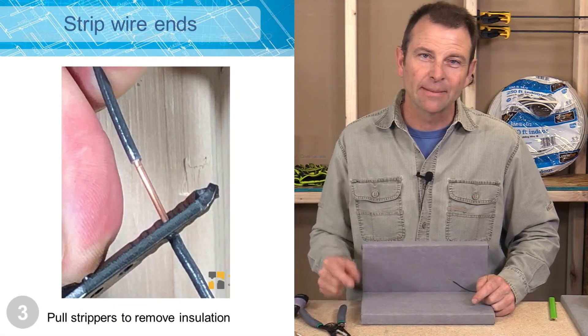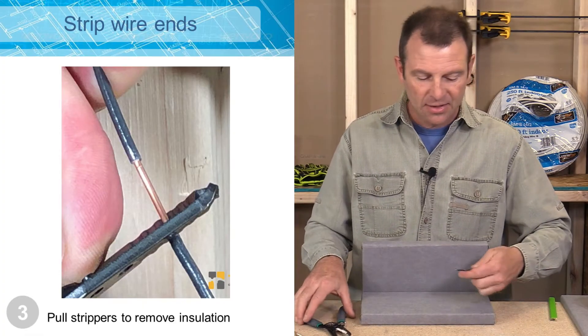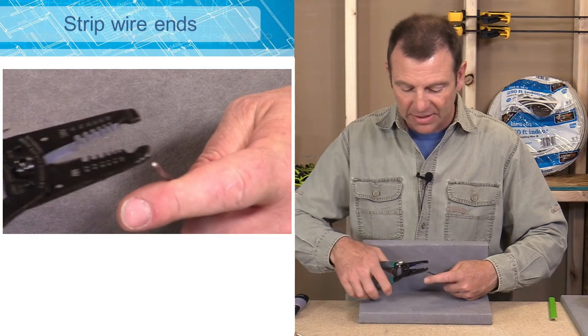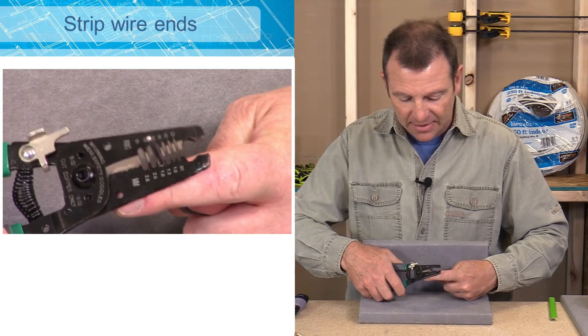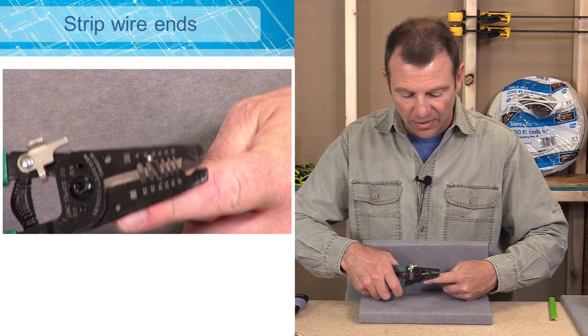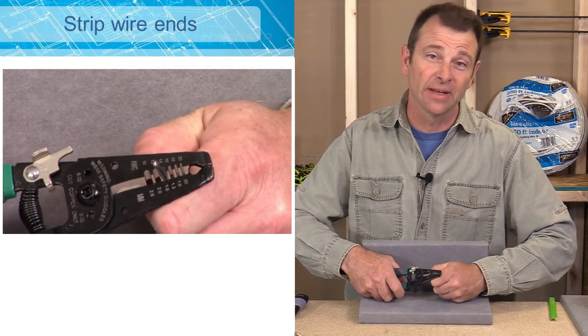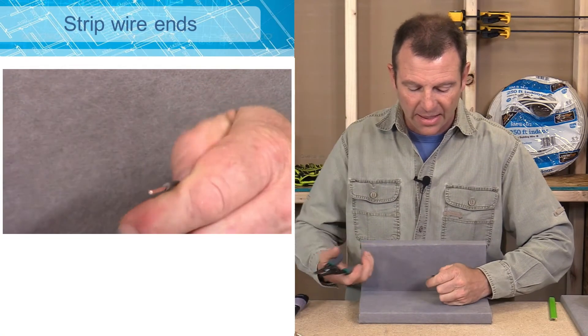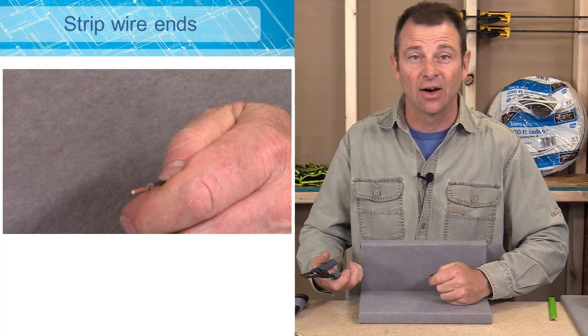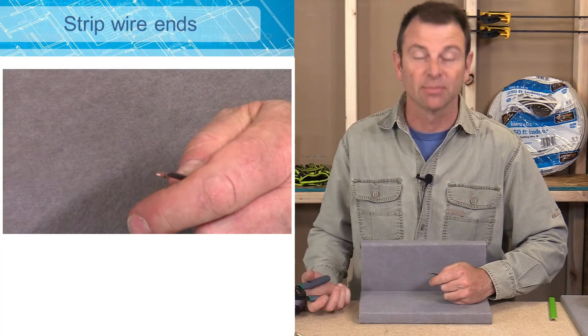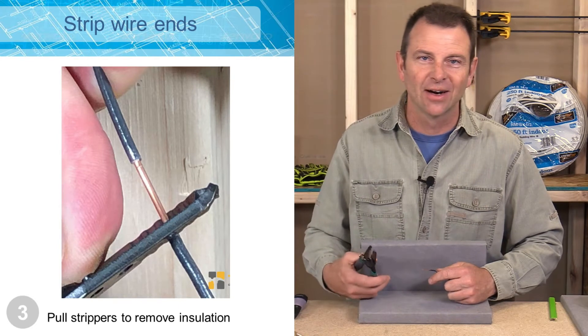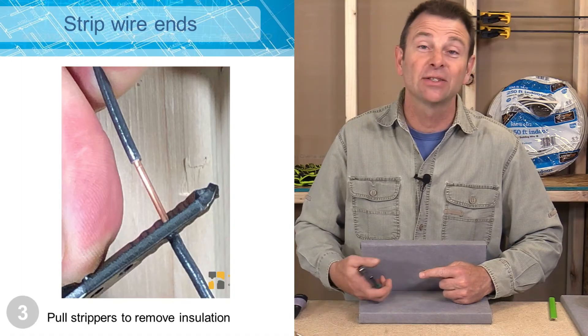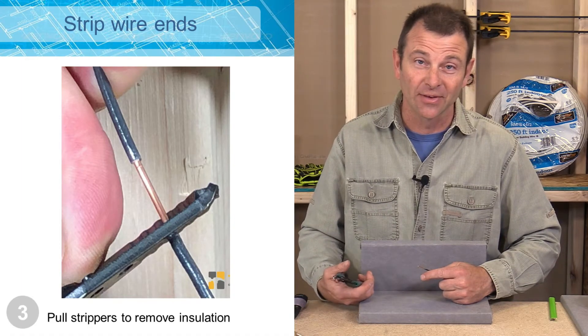So let's repeat that whole process on the other end of this wire. So I have a piece of 14 gauge wire. I'm going to match that 14 gauge wire with my 14 gauge notches. I'm going to find the location where I want to cut the insulation. Pull the handles together. You're going to feel it cut that insulation. You can ease up on the handles a little bit. And then as you pull the insulation away it's going to slide off of that conductor. Now I've exposed my end.